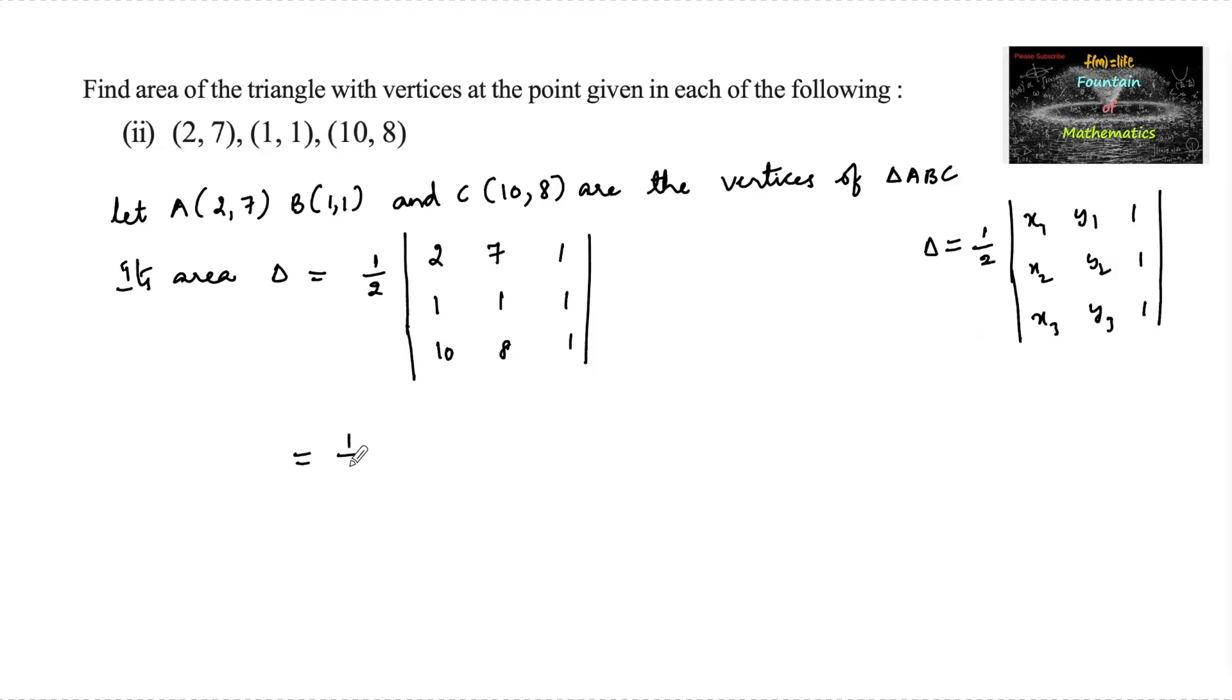So which is equal to 1/2 times modulus of - we can write 2 times, by expanding through the first row. So here plus, minus, and plus. So 2 times determinant of 1,1; 8,1, which is 1 minus 8. And again minus 7 times determinant 1,1; 10,1, so 1 minus 10. Plus 1 times determinant 1,1; 10,8, so 1 times 8 minus 10 times 1.